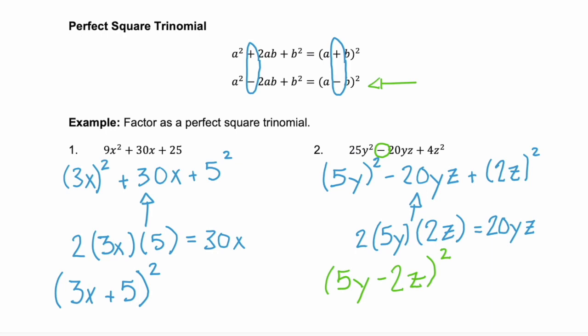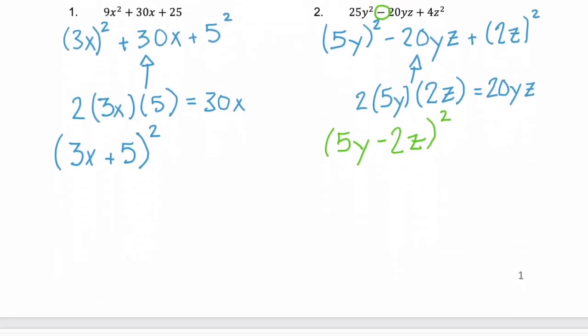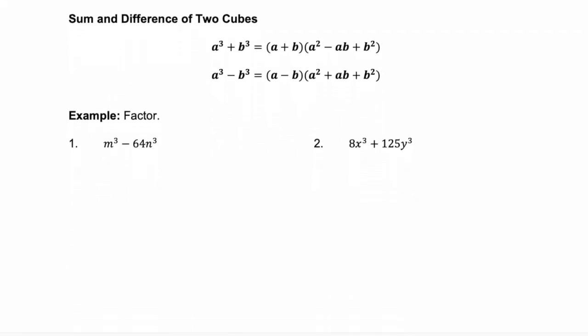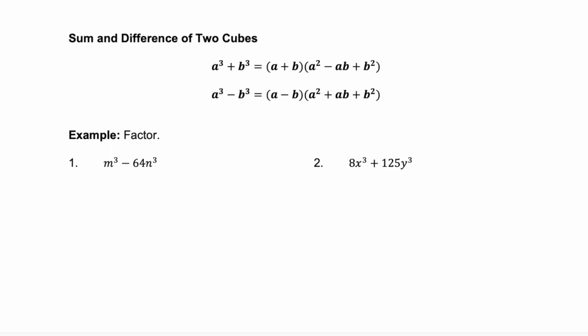Let's look at another type of special factoring. These are called sum and difference of two cubes. Notice that the sum and difference of two cubes involves two terms, where each term is something cubed. And notice that both of these factor to a binomial and a trinomial. And the only difference between those factors are the signs in between each. Now there's a really easy way to remember the signs. Just remember soap.